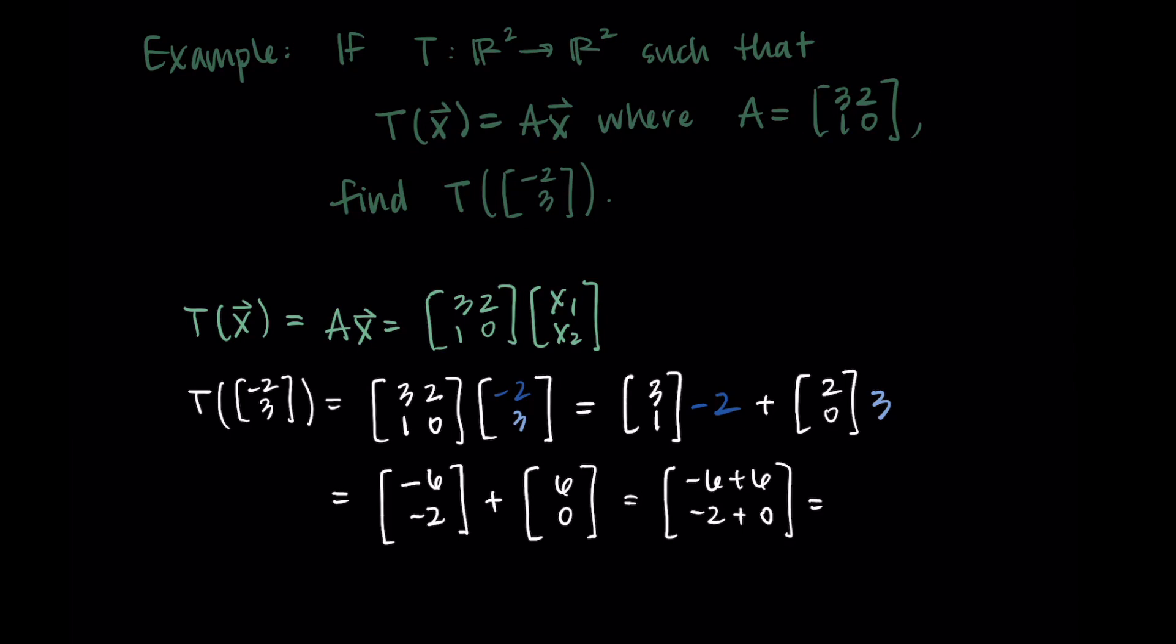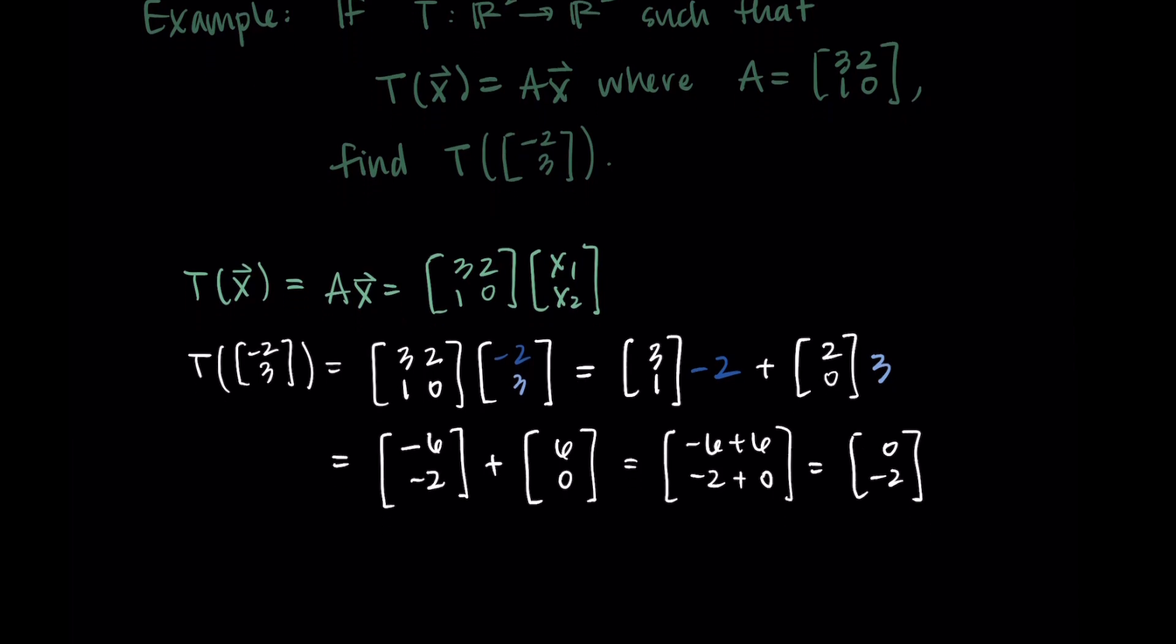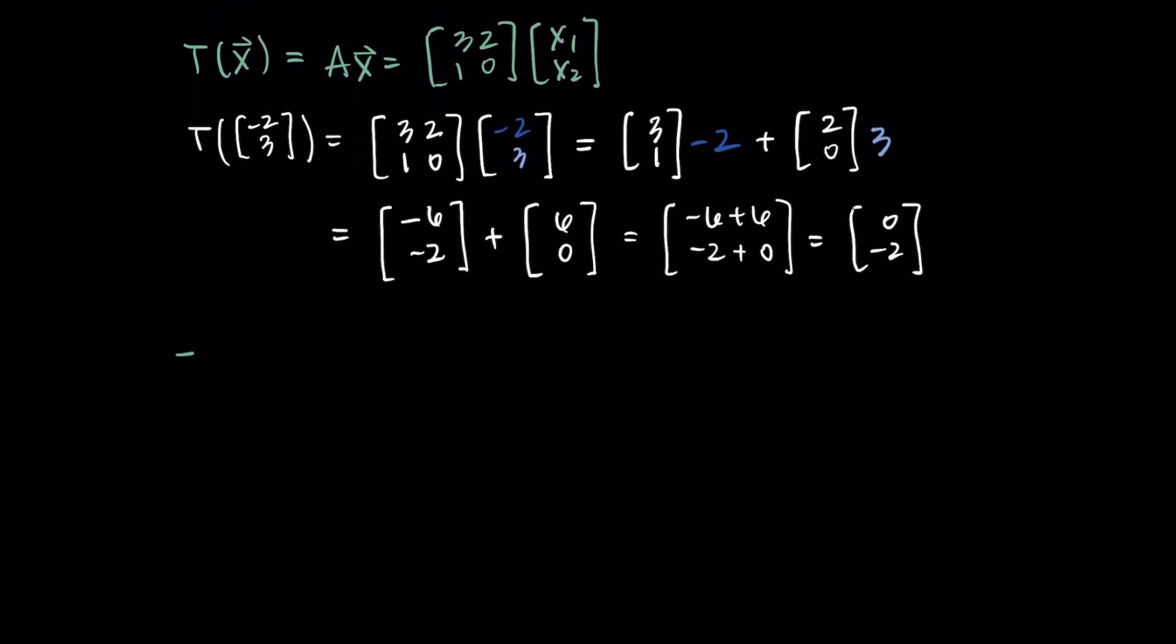Then when we simplify, I'm getting the vector [0, −2]. So we input a vector [−2, 3], and we were given a vector as the output [0, −2]. So if we were to write a sentence about what happened here, we might say that T maps the vector [−2, 3] to the vector [0, −2].